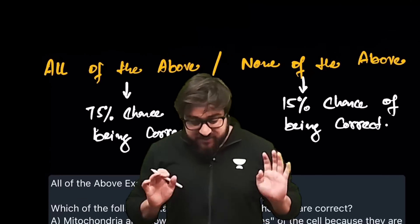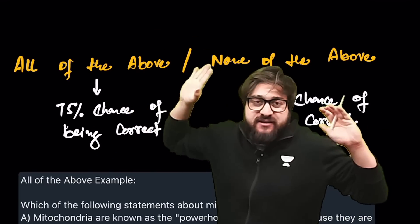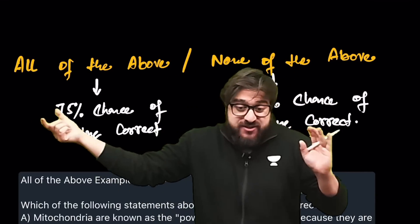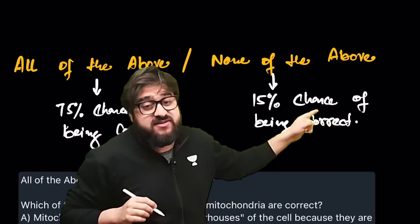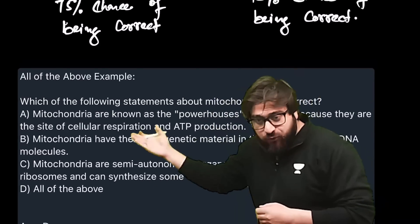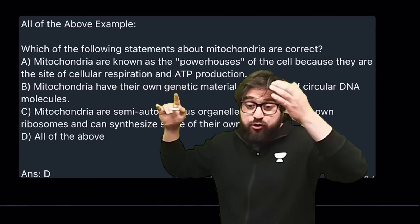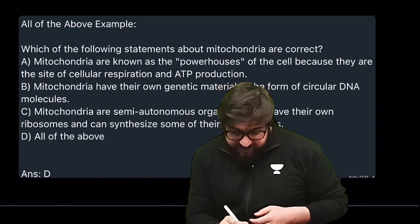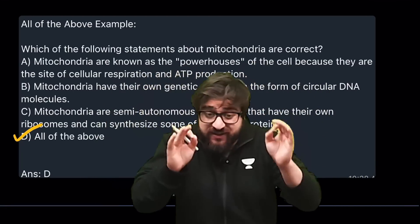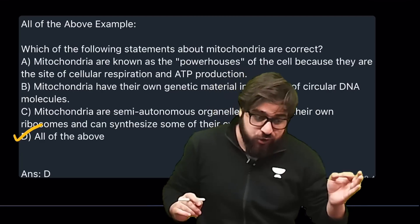The fourth strategy applies when options include 'All of the above' or 'None of the above.' There is a 75% chance that 'All of the above' is correct, and a 15% chance that 'None of the above' is correct. For example, in a biology question — 'Which of the following statements about mitochondria are correct?' — option D, 'All of the above,' has the maximum chance of being correct. Use this strategy to boost your exam score on questions you cannot follow.